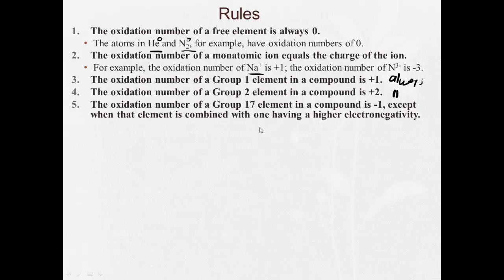The oxidation number of a group 17 element in a compound is minus one. Except for when that element is combined with one having a higher electronegativity. For example, the oxidation number of chlorine is minus one in HCl. However, the oxidation number of chlorine will be plus one in HOCl. Since oxygen is more electronegative than chlorine, the oxygen is going to be minus two. The hydrogen is going to be plus one. The chlorine is going to have to then be plus one.